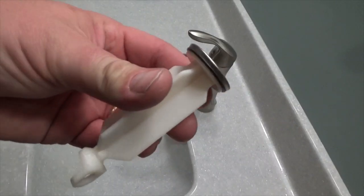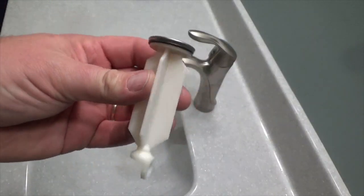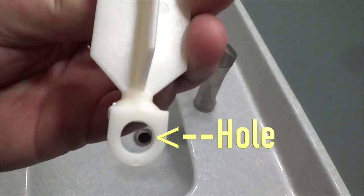The waste plug, also called a stopper, is now ready to install. Insert the stopper, making sure the hole is facing the back of the sink.